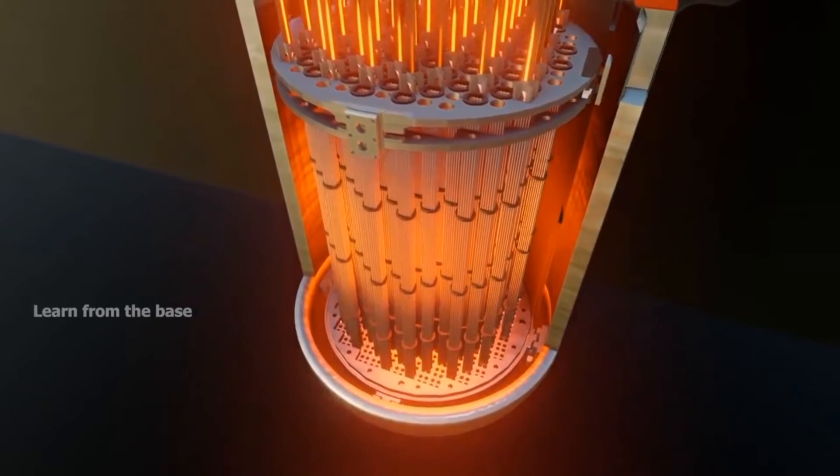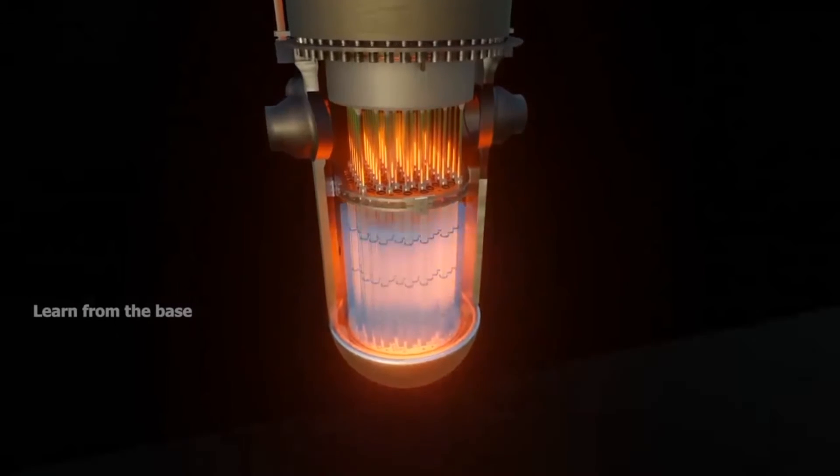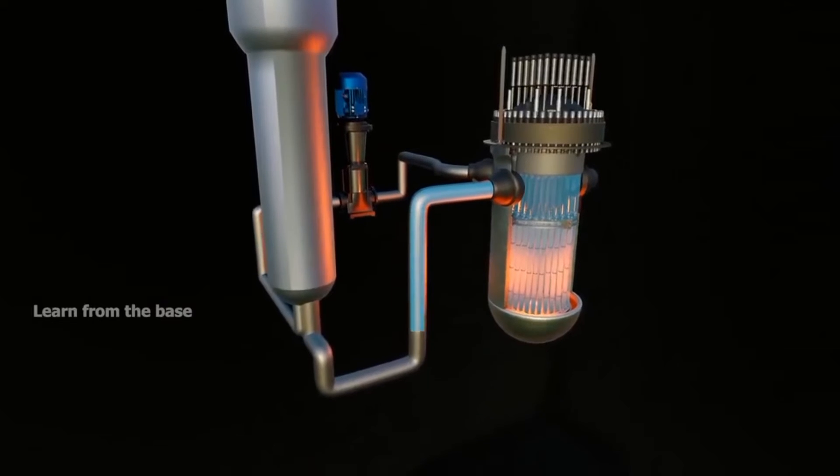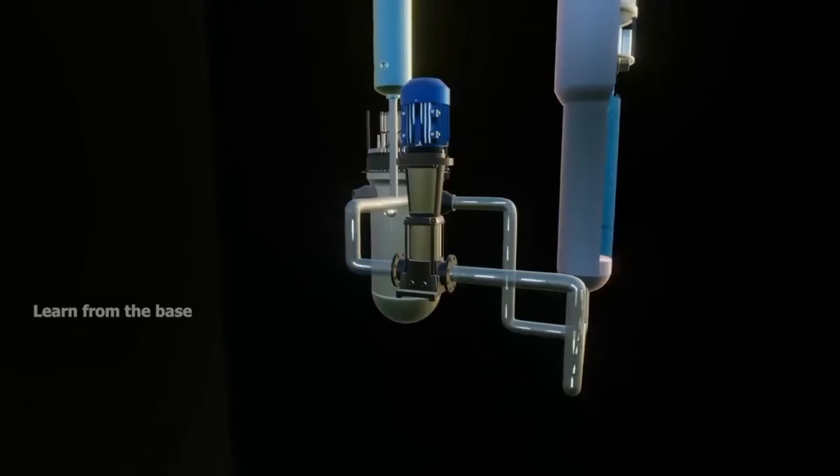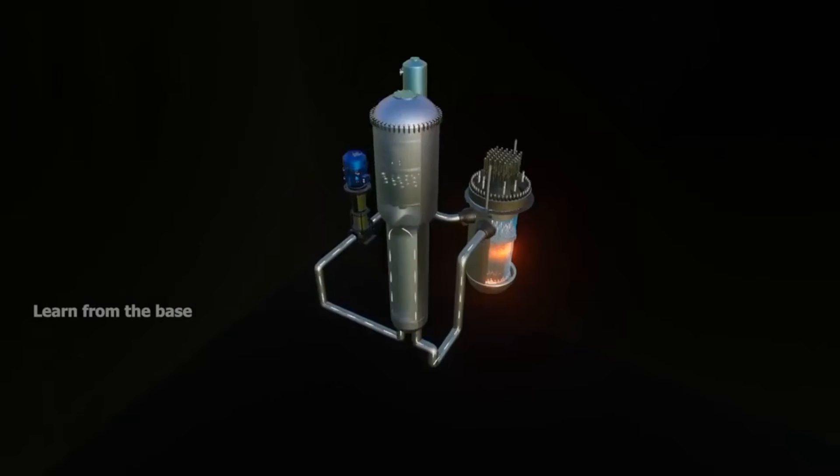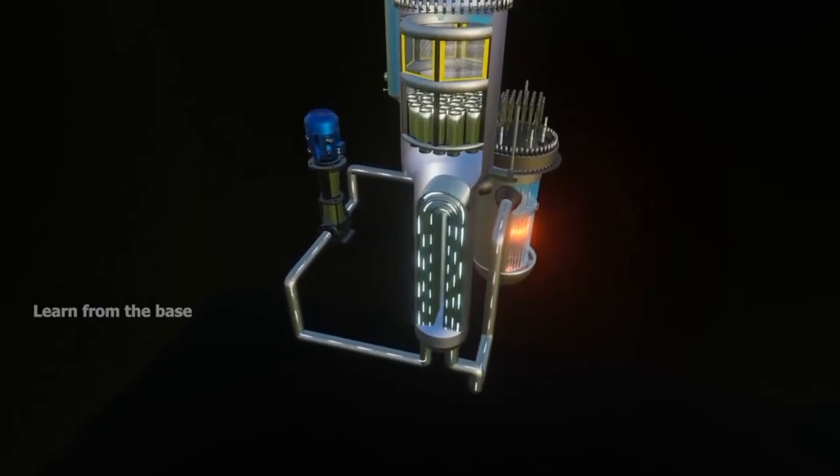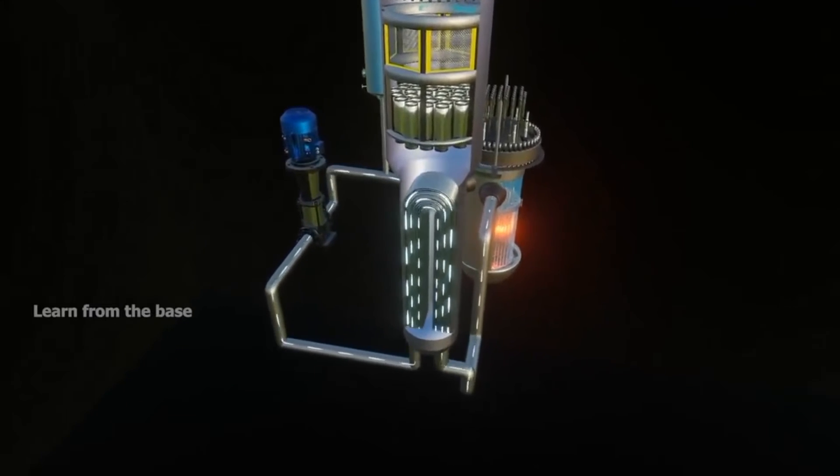These tubes then transfer heat to the primary circuit water simply by contact. The heated and high pressure water then flows to a steam generator through pumps and pipes. Within the steam generator, the hot water passes through a bundle of around 6,000 inverted U-shaped tubes.